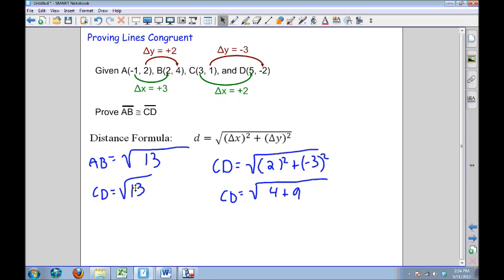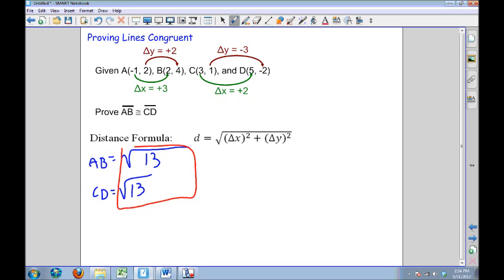Notice that my distance for AB and my distance for CD are the same. If distances are equal, that means that line segments are congruent. So I will make a conclusion that since AB is equal to CD, then AB segment is congruent to segment CD. Since their measures are the same, the two segments are congruent.